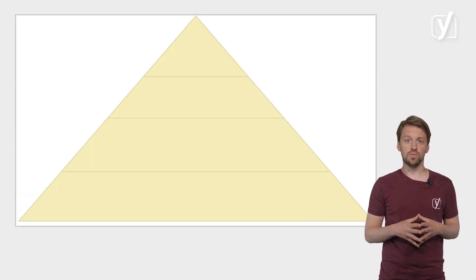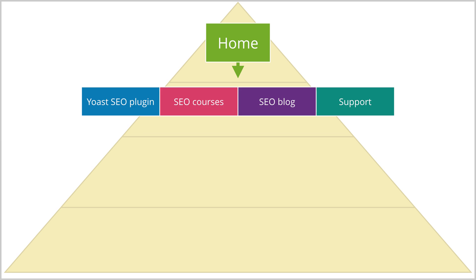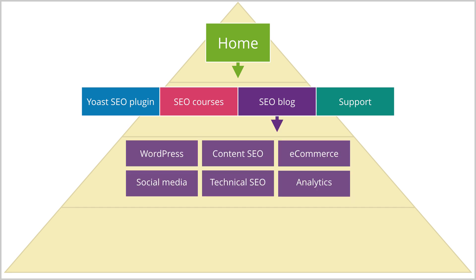Categories that fall under another category are called a child category. For example, for Yoast.com, the pyramid would look like this. Our homepage at the top. The category pages are Yoast SEO plugin, SEO courses, SEO blog, and support under it. Almost everything we do can be filed under one of these major categories. And these parent categories have child categories. The category page SEO blog, for example, has child categories for every SEO topic we write about, such as analytics.